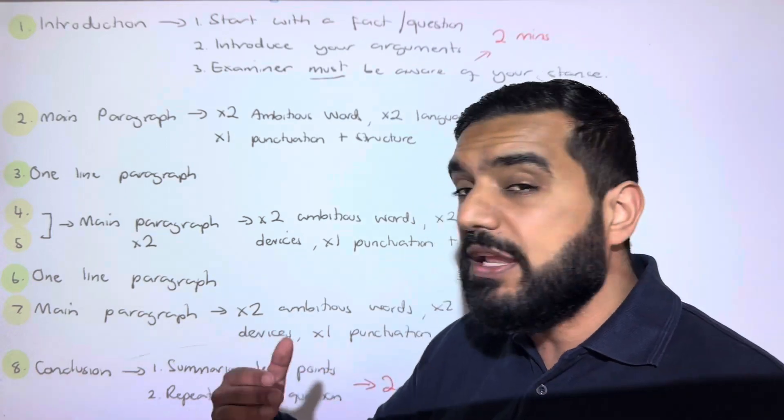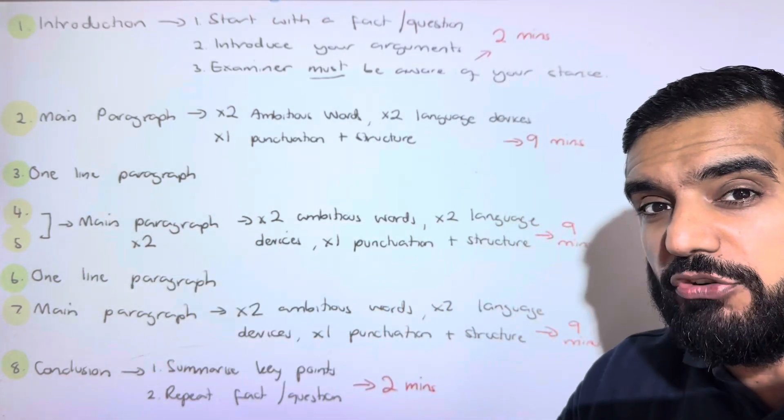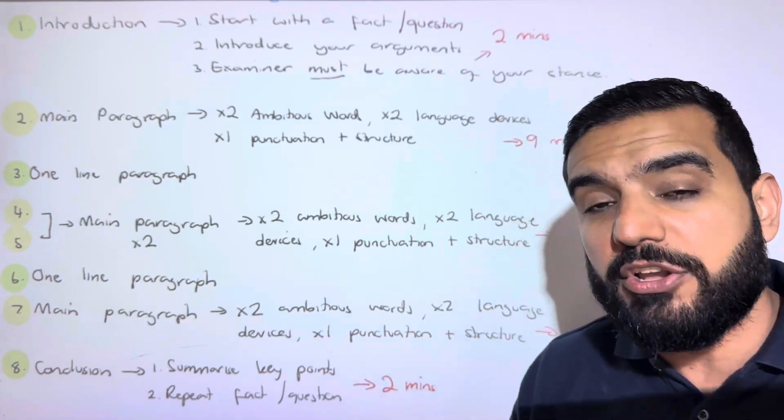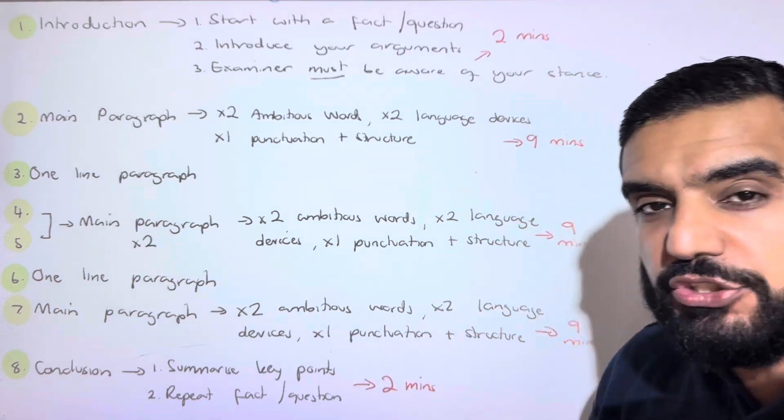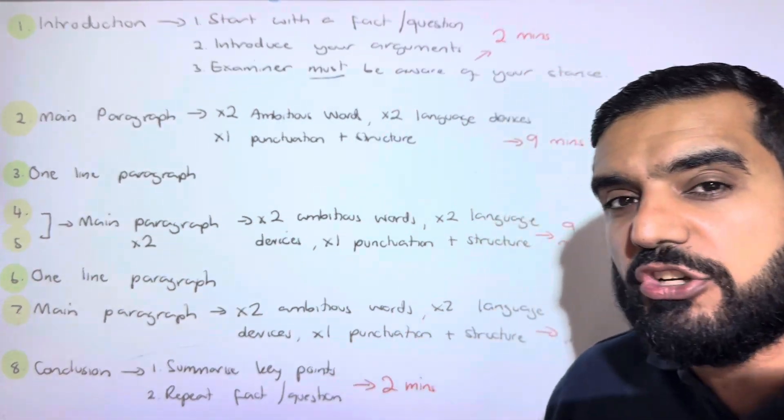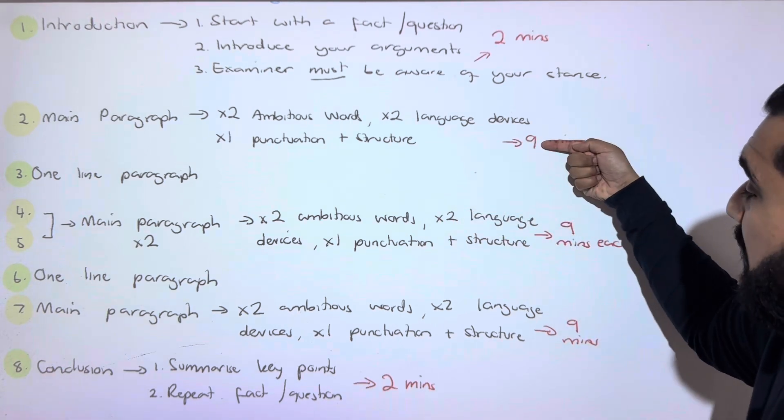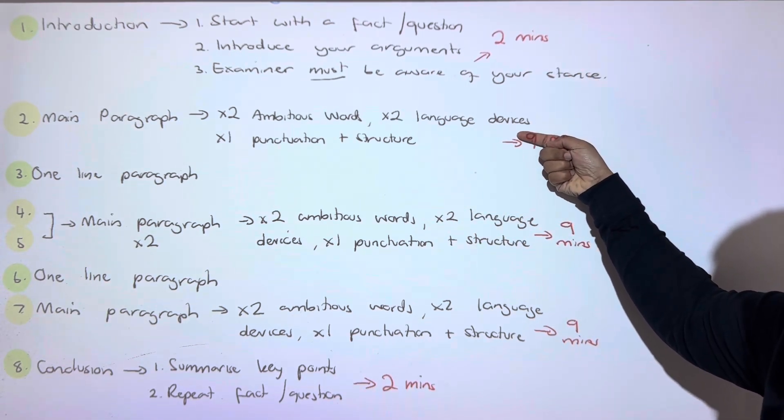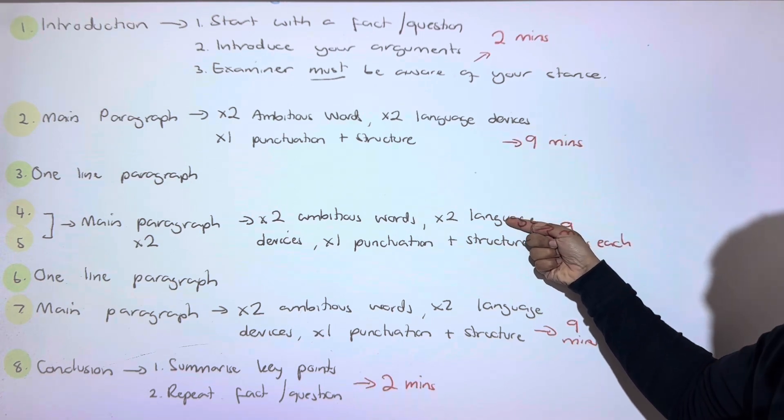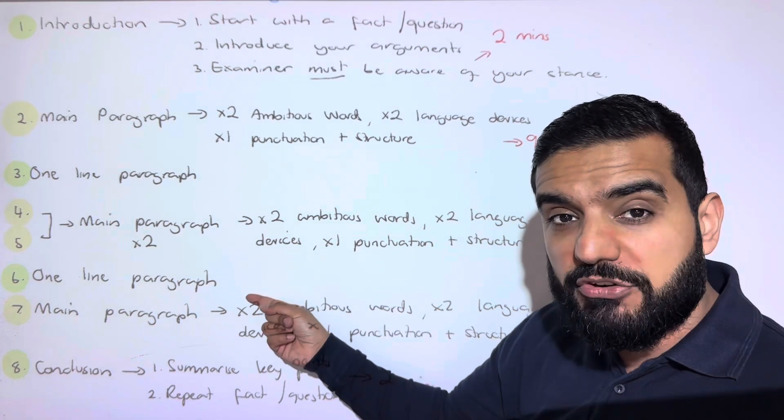Then we do paragraphs four and five. These are our two big paragraphs where we present our main argument two and main argument three. We do vocabulary, punctuation, language devices, and structure in these paragraphs. On each main paragraph, we're spending nine minutes. So two-minute intro, nine-minute main paragraph one, nine-minute main paragraph two, nine-minute main paragraph three.